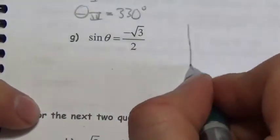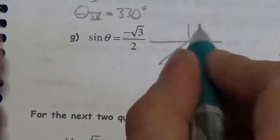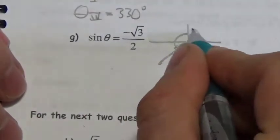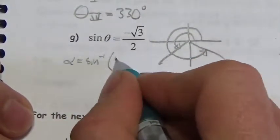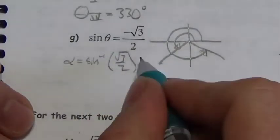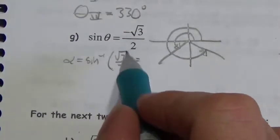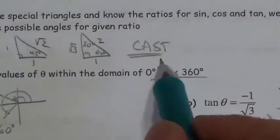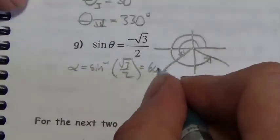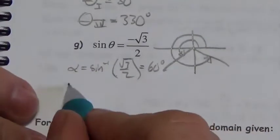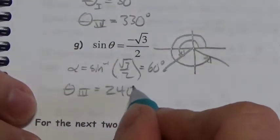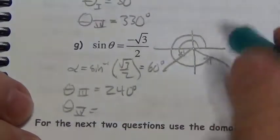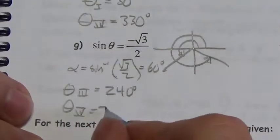Sine of theta equals negative root 3 over 2. Sine is negative in quadrants 3 and 4. The inverse sine of positive root 3 over 2: root 3 is the opposite side in the 30-60-90 triangle, opposite 60 degrees. So the reference angle is 60 degrees. In quadrant 3: 180 plus 60 equals 240 degrees. In quadrant 4: 360 minus 60 equals 300 degrees.